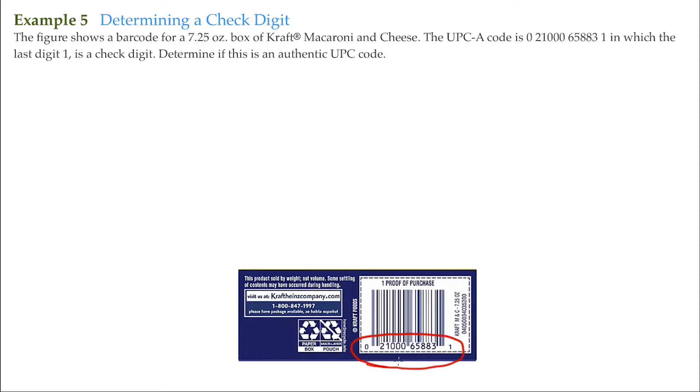The UPC-A code is 021000658831 in which the last digit, the one, is a check digit. We're going to determine if this is an authentic UPC code.